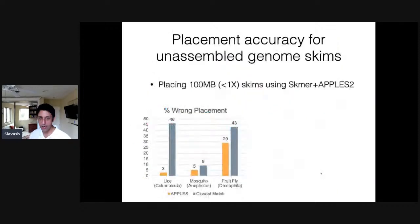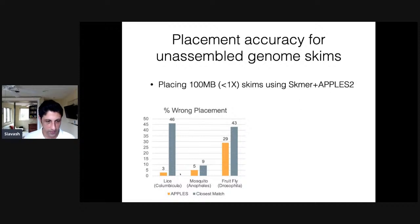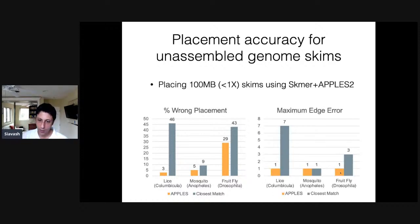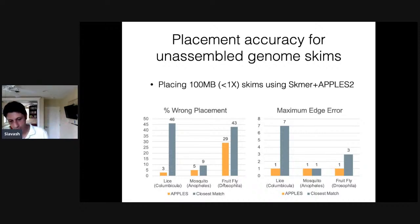We tested the skimmer-plus-APPLES pipeline on three different datasets of genome skims — some real, some simulated — asking what percentage of the time we find the correct placement versus just using closest placement. For most datasets we are finding the correct placement most of the time. For Drosophila, 30% of the time we find the wrong placement, but we are off by only one edge, which is not too bad given that these trees have tens of species. So you can do placement without assembly and without alignment, using k-mer-based distances.